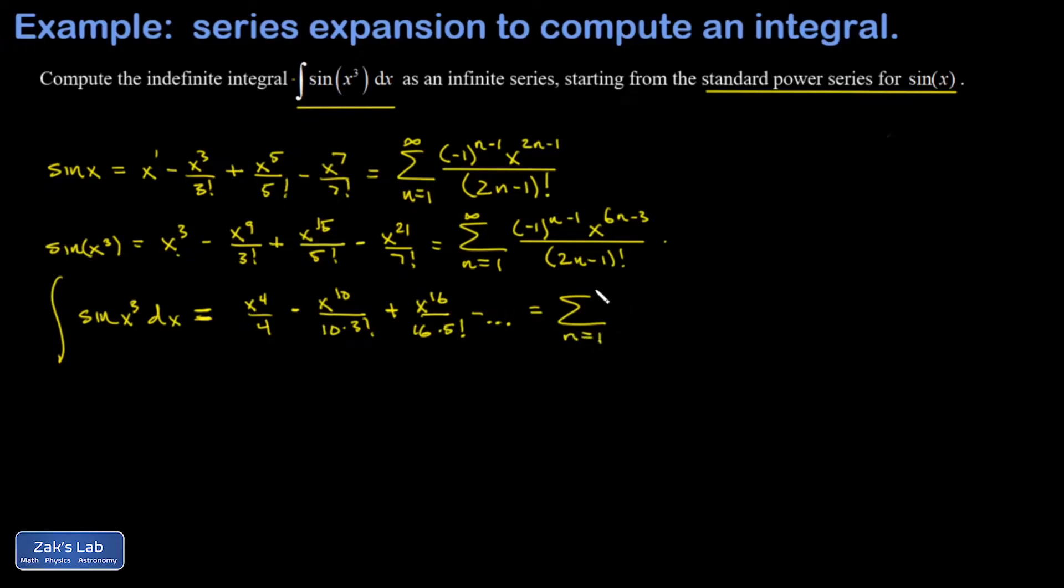I can also just think of integrating term by term inside the sigma notation. If I have an x to the 6n minus 3, I just add one to that exponent and get x to the 6n minus 2, then divide by that exponent. This is just the power rule for anti-derivatives, and I've got immediately in sigma notation an infinite series representation of the value of this anti-derivative. I should also include that there is an arbitrary constant of integration here.